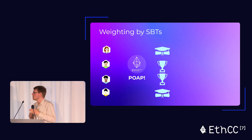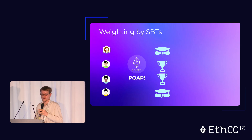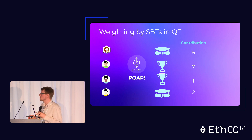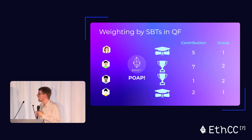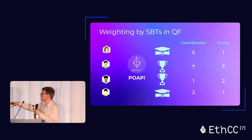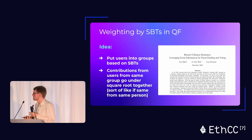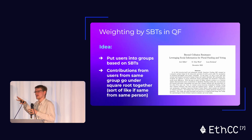Now, weighting by SBTs. Imagine users have some SBTs reflecting their social history — they completed a TE Academy course, got a POAP from ECC, whatever — and they want to contribute to a quadratic funding protocol. The extra information about them from their Soulbound Tokens groups them in some sense. The people with diplomas are one kind of group; the people with trophies are another. The idea pioneered by Glen Weil and collaborators in the Beyond Collusion Resistance paper is to weight the contributions by these Soulbound Tokens.